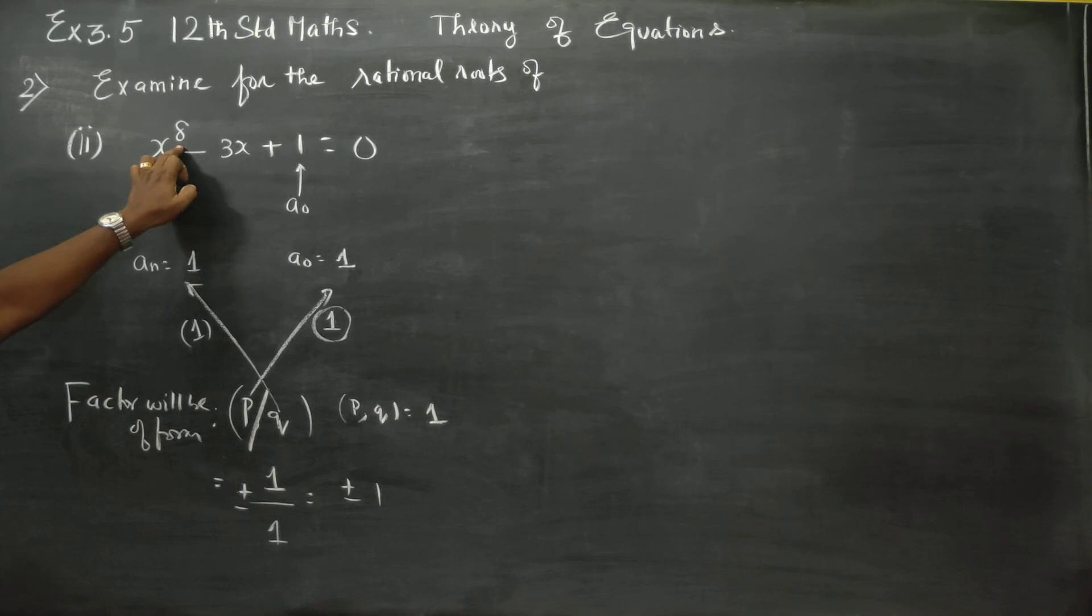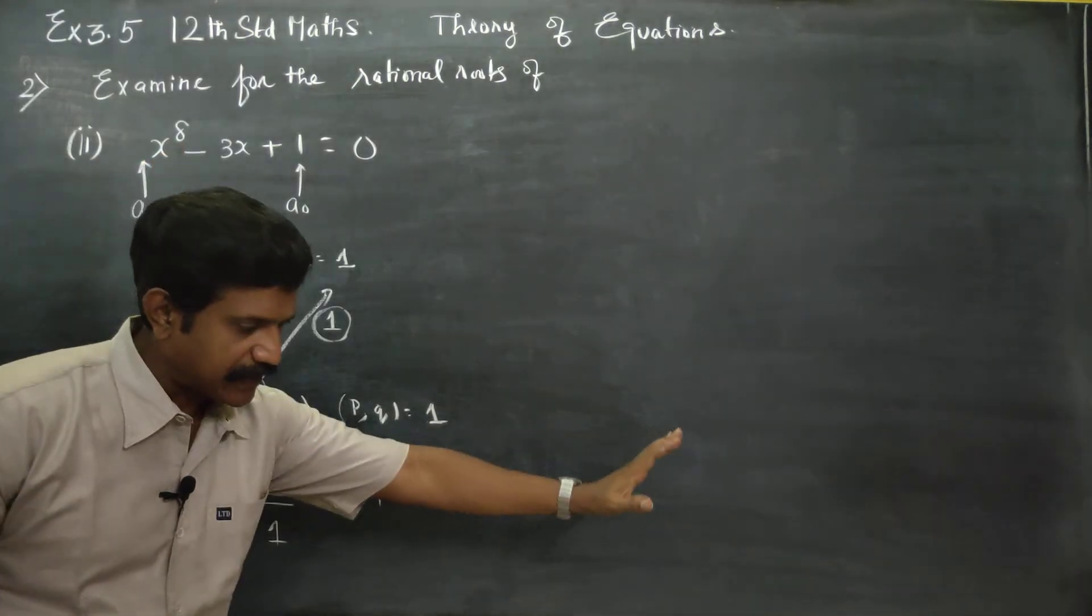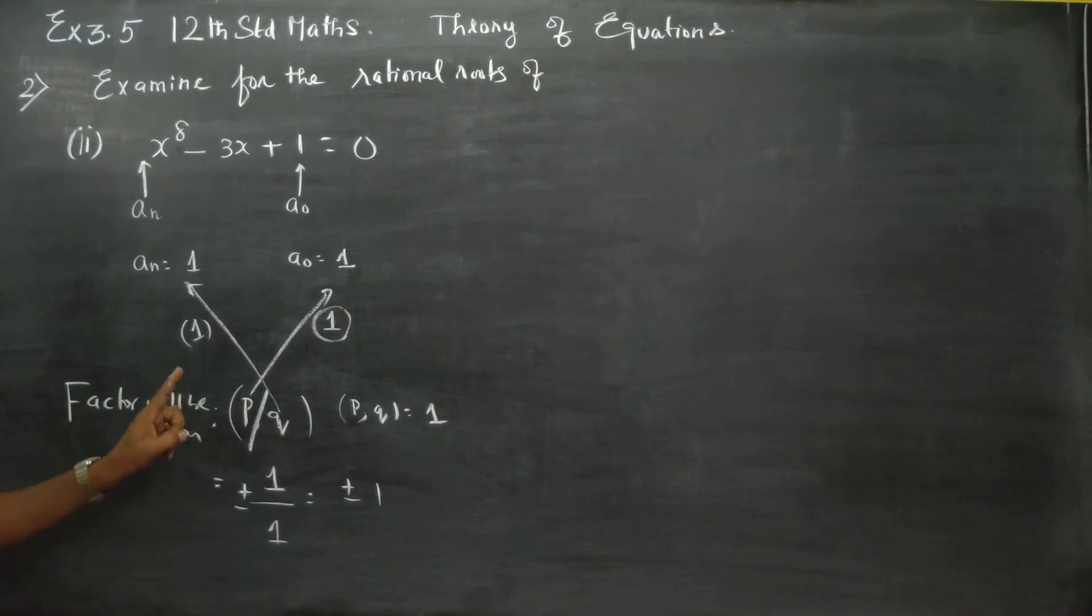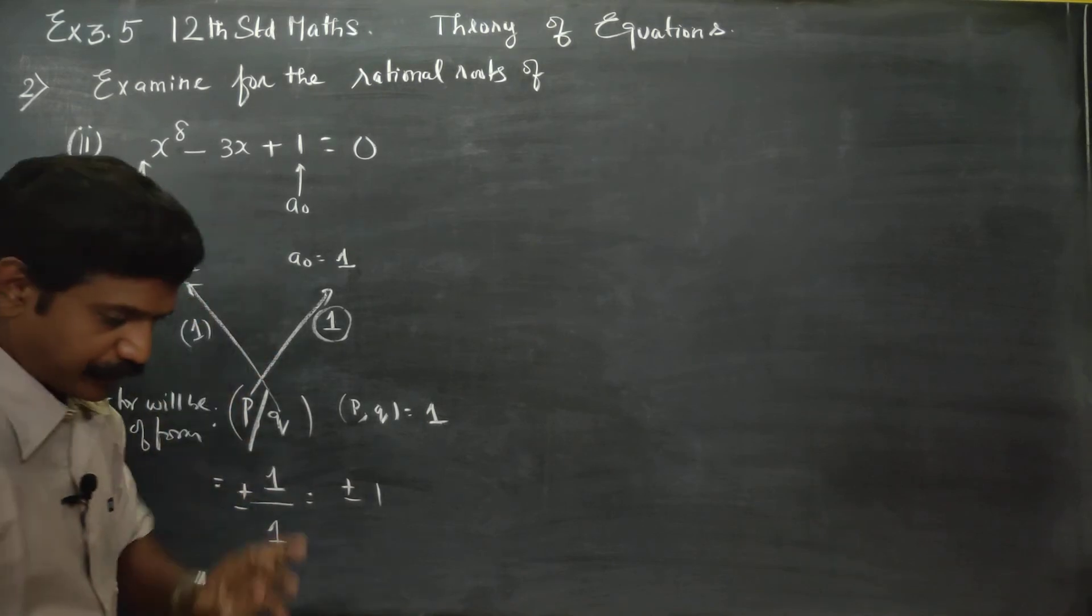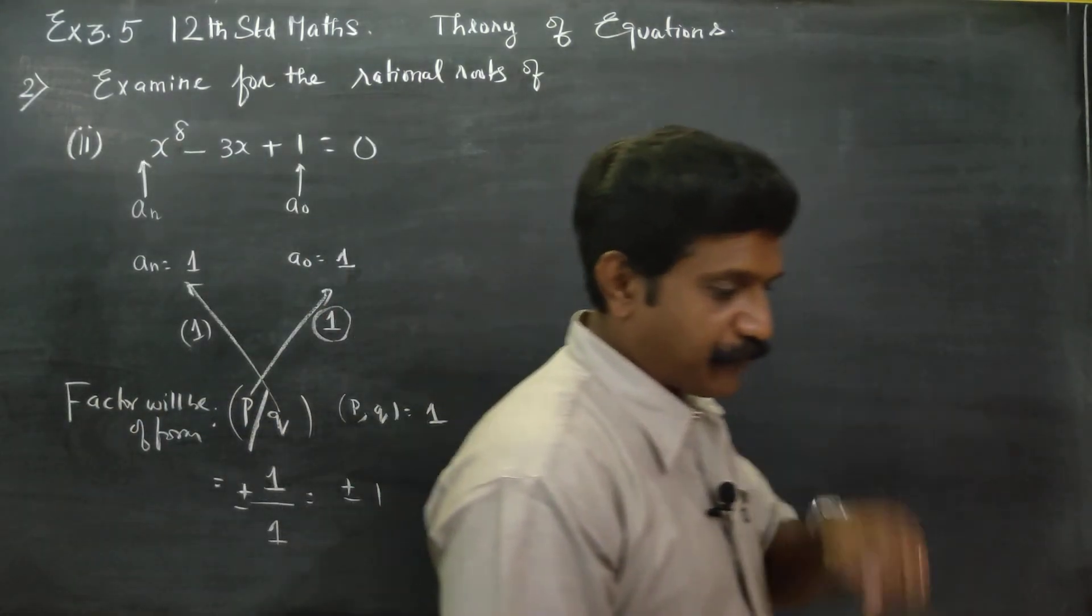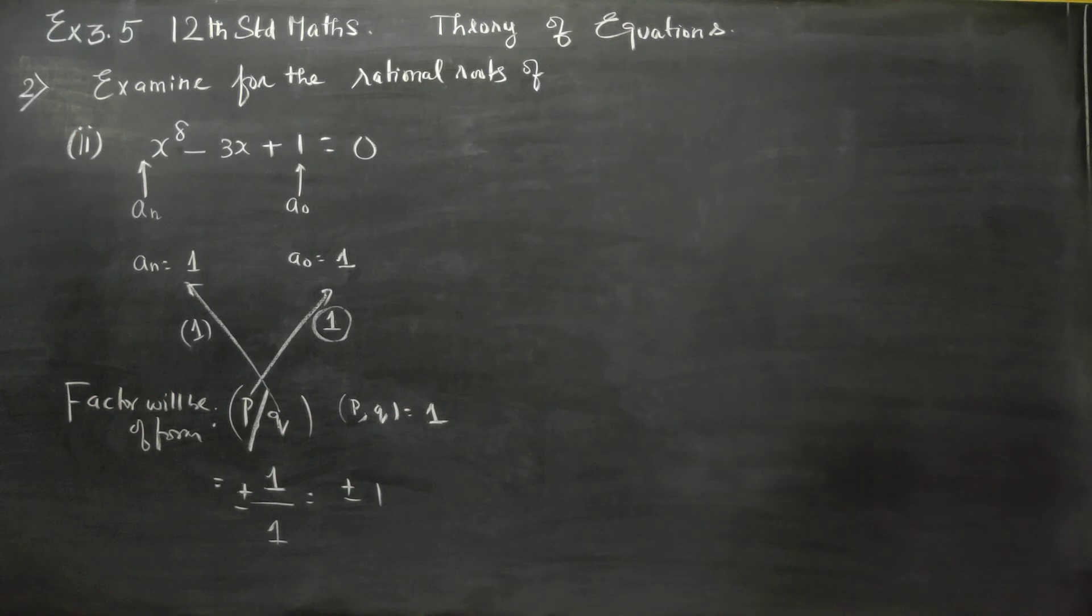For x^8 - 3x + 1, the possible roots are plus 1 and minus 1. Let's confirm these answers by checking both.